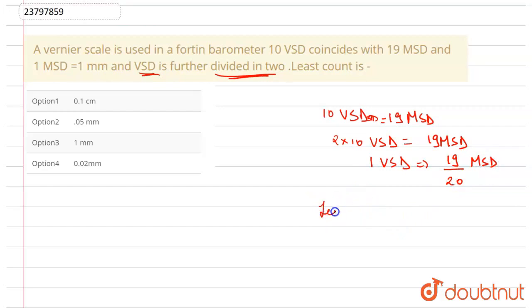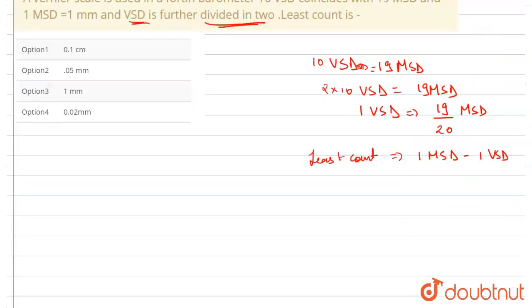And for the least count, we use the formula 1 MSD minus 1 VSD. So, this gives us 1 MSD minus 19 by 20 MSD, which equals 1 by 20 MSD, equal to 0.05 mm.